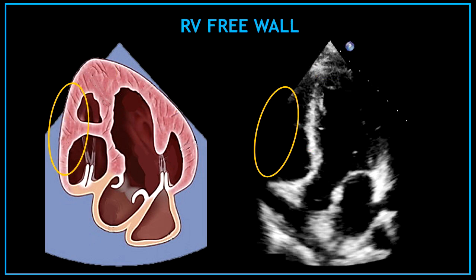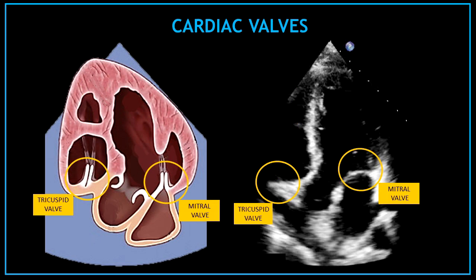Also, in this view, we can visualize the right ventricle free wall. Like in the apical 4 chamber view, we can also visualize here the tricuspid valve on the left hand side and the mitral valve on the right hand side of this view.